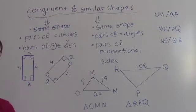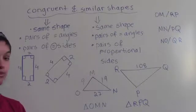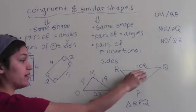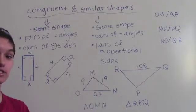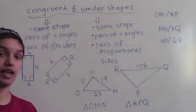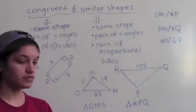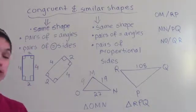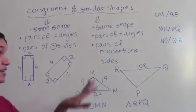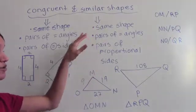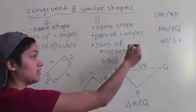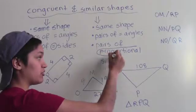Note that the triangles in this problem are not congruent because triangle RPQ has a side of length 108 and none of the sides in the triangle OMN have this length. But we are told that these shapes are similar. Similar shapes have the exact same shape and have equivalent pairs of angles, but their corresponding sides are just proportional to each other.